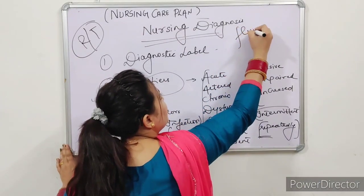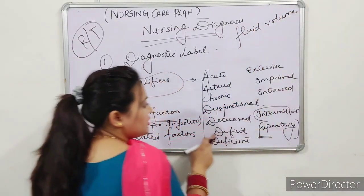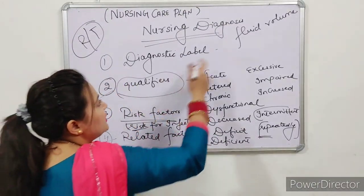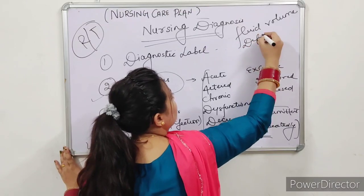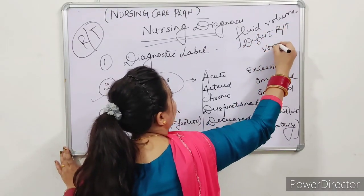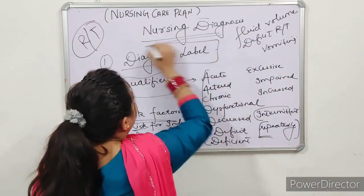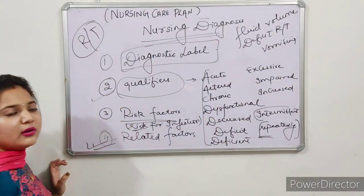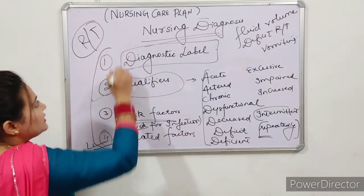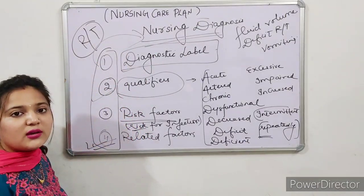For example, if a patient has vomiting, they will develop Fluid Volume Deficit. 'Deficit' is a qualifier. So the nursing diagnosis becomes: Fluid Volume Deficit Related to Vomiting. Vomiting becomes the related factor, and 'Deficit' is the qualifier on the diagnostic label. When these four components combine, a nursing diagnosis is created.